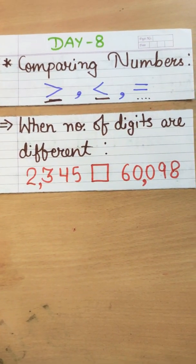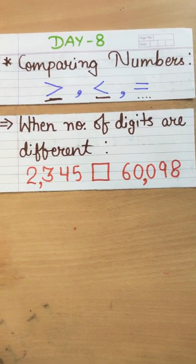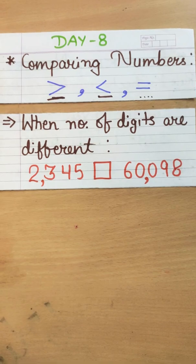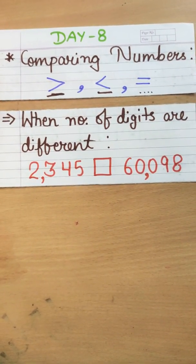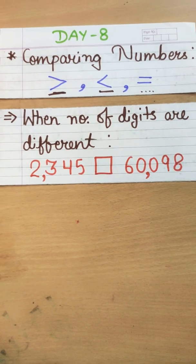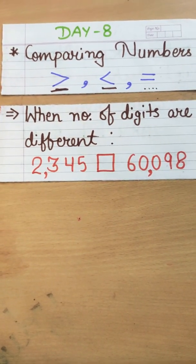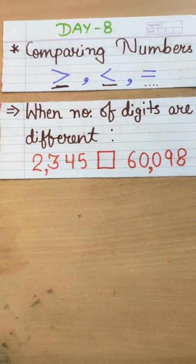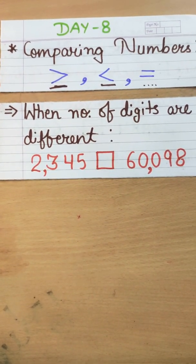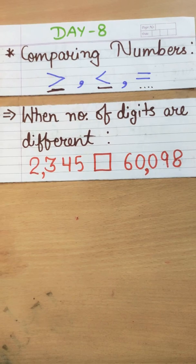Now, let's start with our numbers by comparing our numbers. When we compare the numbers, there are two cases: when the number of digits are different, and when the number of digits are same in any number. Like when we see if number of digits are different, the number which has more number of digits is the greater number.